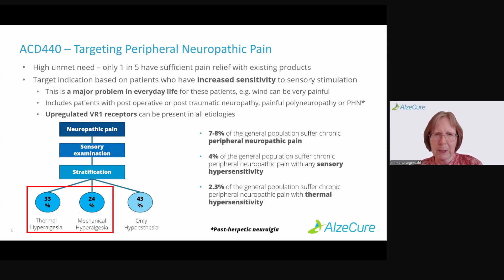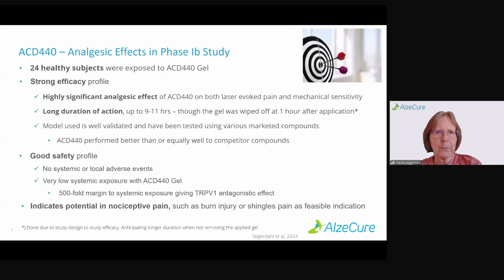One example is that patients with post-traumatic neuralgia — like the gentleman I just showed you — have a very high representation of TRPV1 receptors in the skin.